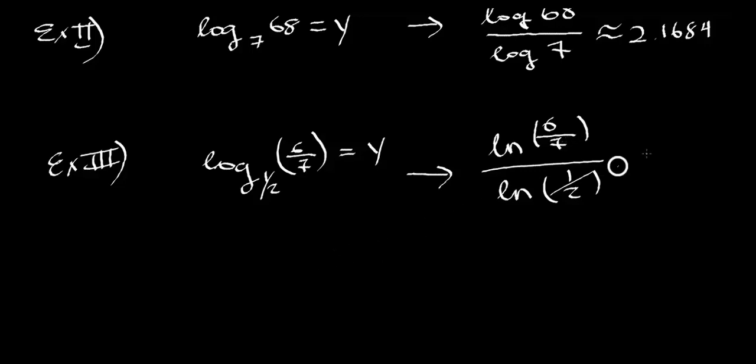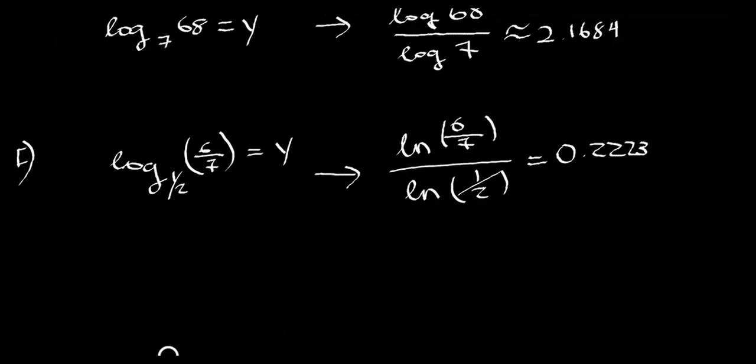And if we do that, I am, my calculator is, divided by the natural log of one half. Now I get 0.2234. This should be a 4. This is approximately.